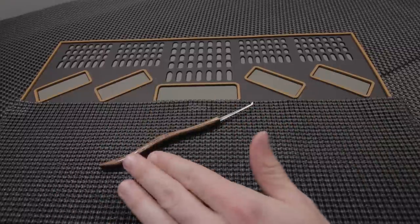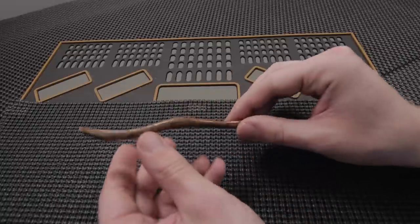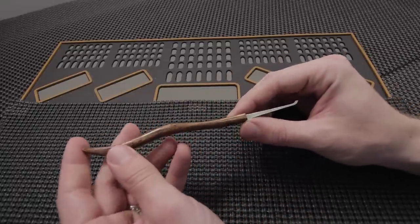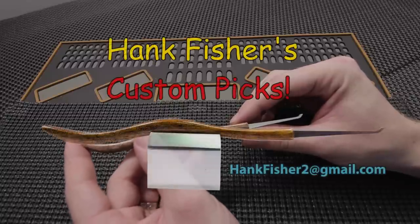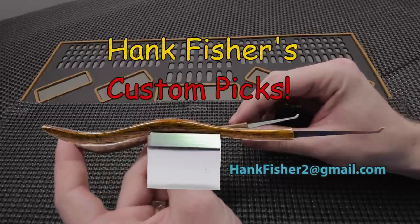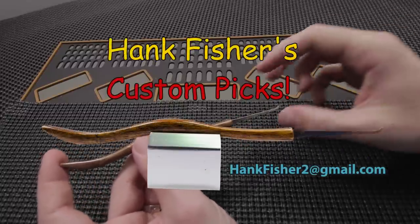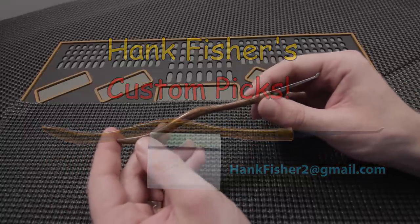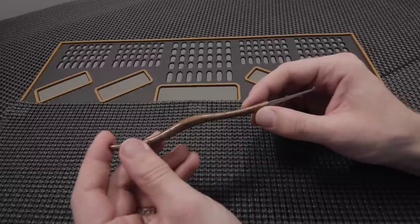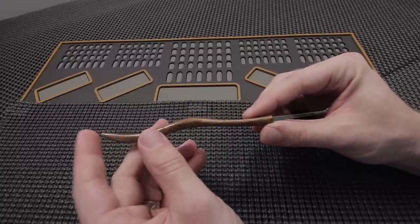So this pick is a really great pick to have. I am so happy to have it, and if you want to be able to get one for yourself, how you can order it is you can send Hank Fisher an email at hankfisher2 at gmail.com. I'll drop that in the description below, and you'll also see it on the screen. And you can just send him an email and talk to him, let him know what you want, and he'll be able to tell you how much he'd like to charge for it.